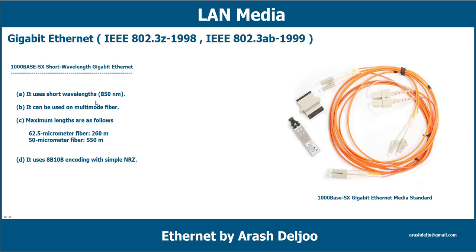1000Base-SX technologies are in the beginning stage of being widely implemented in enterprise-level networks and are primarily used for shorter cable runs between pieces of equipment within a building. 1000Base-SX is an extension of standard ethernet technologies to gigabit-level network speeds, and it is implemented using only multi-mode fiber optic cabling.